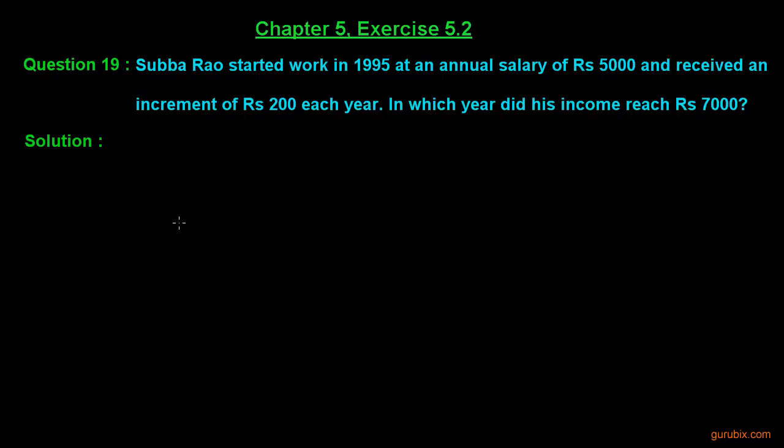Let us learn how to solve question number 19 of exercise 5.2 of chapter 5. This question says that a person, Mr. Subba Rao, started work in 1995 at an annual salary of Rs.